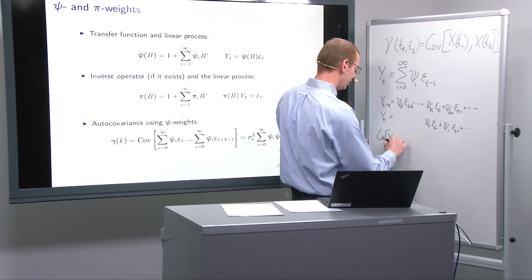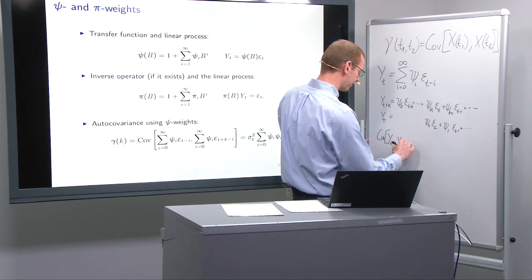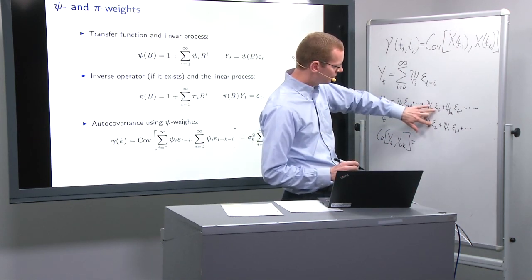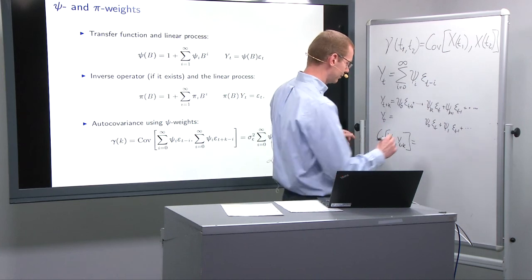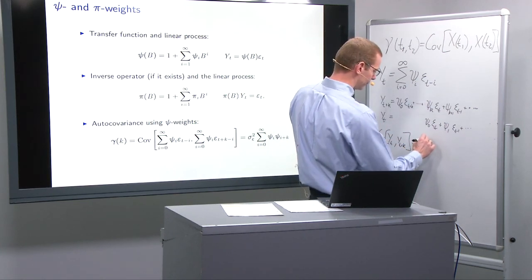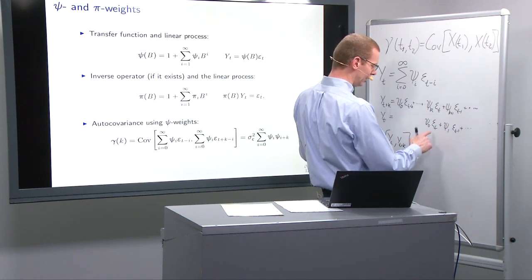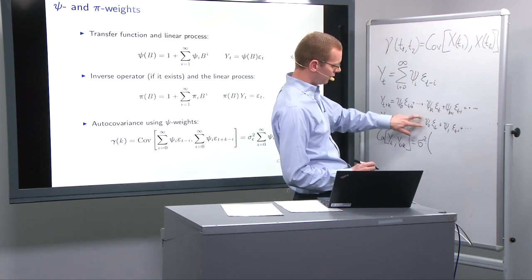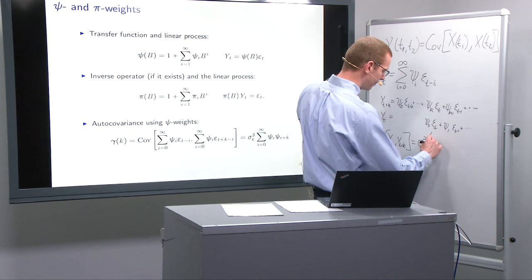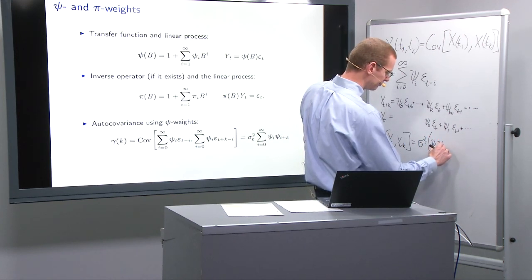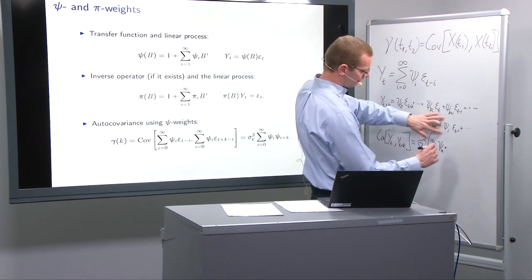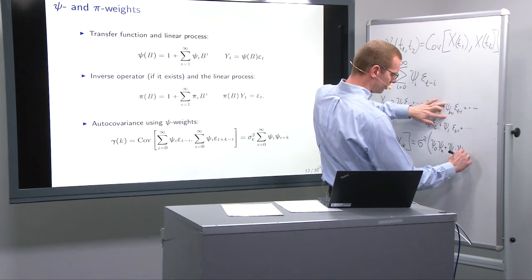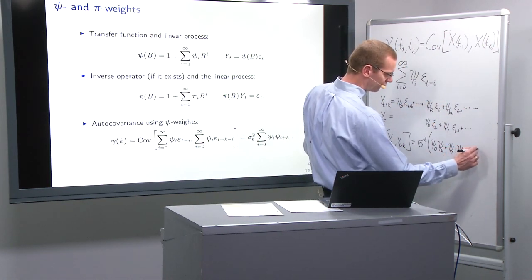So when I get to the covariance between y_t and y_{t+k}, what I get for ε_t is the variance of that, that is σ squared. That comes for all the elements here, so I'll take that outside the parenthesis. And then I have ψ_0 multiplied by ψ_k plus ψ_1 multiplied by ψ_{k+1}, and I get the same structure all the way out.